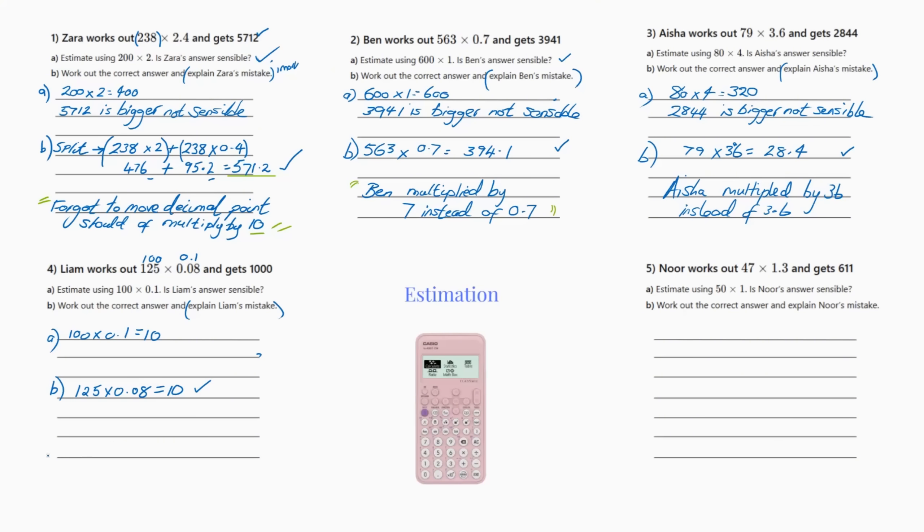So this is the correct answer. So now we've got to explain Liam's mistake. What Liam did was he multiplied by 8 instead of 0.08, and that's why you got a thousand. So that's that one.